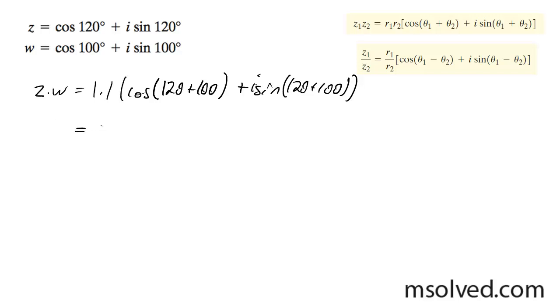We end up with the cosine of 220 plus i sine of 220 degrees.